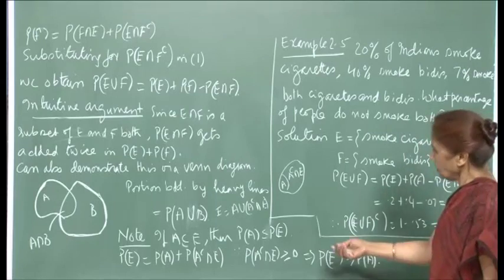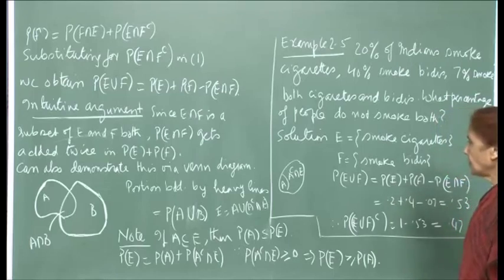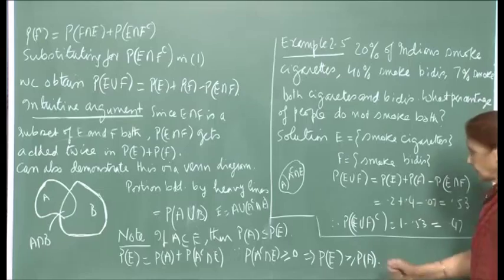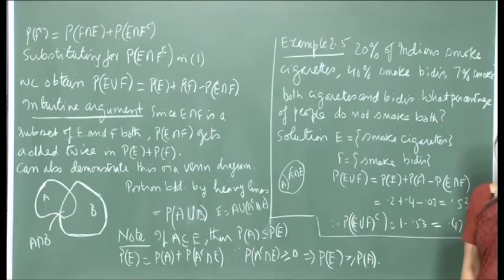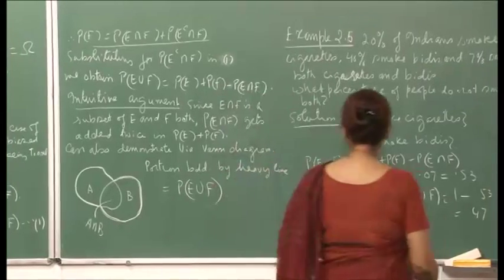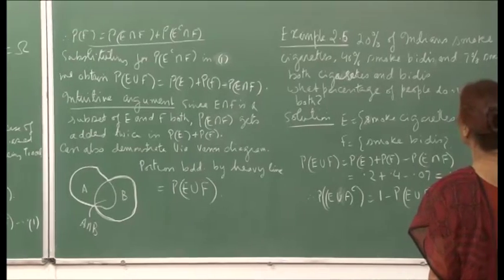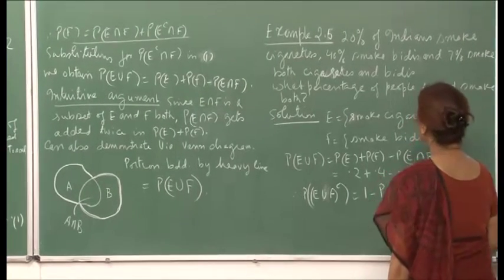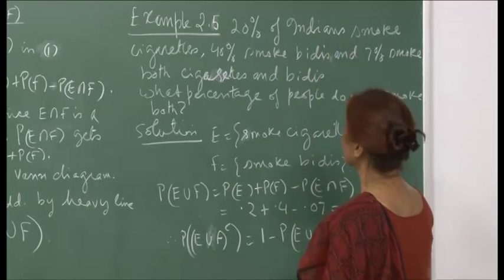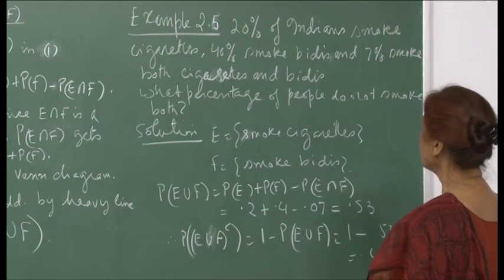This is an immediate consequence, included for completeness. Once we have these three propositions, we can get more results and compute probabilities of more interesting and complex events. Consider this example: 20% of Indians smoke cigarettes, 40% smoke bidis, and 7% smoke both cigarettes and bidis. What percentage of people do not smoke either?